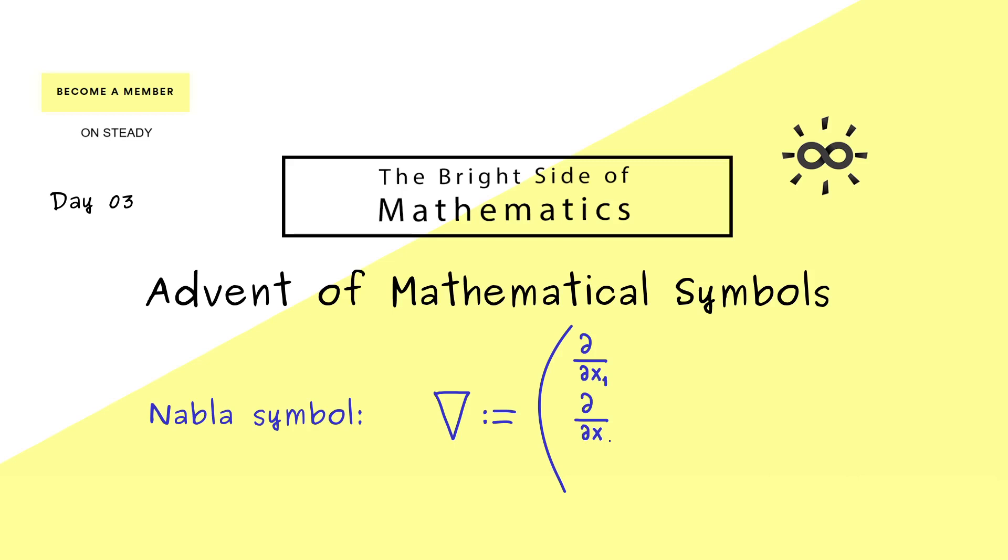Then the second component would be the partial derivative with respect to the second variable. Of course, if you work in three dimensions, it ends with the third variable here. However, in general, with n dimensions, we just have n components and we end with the partial derivative with respect to the last variable.